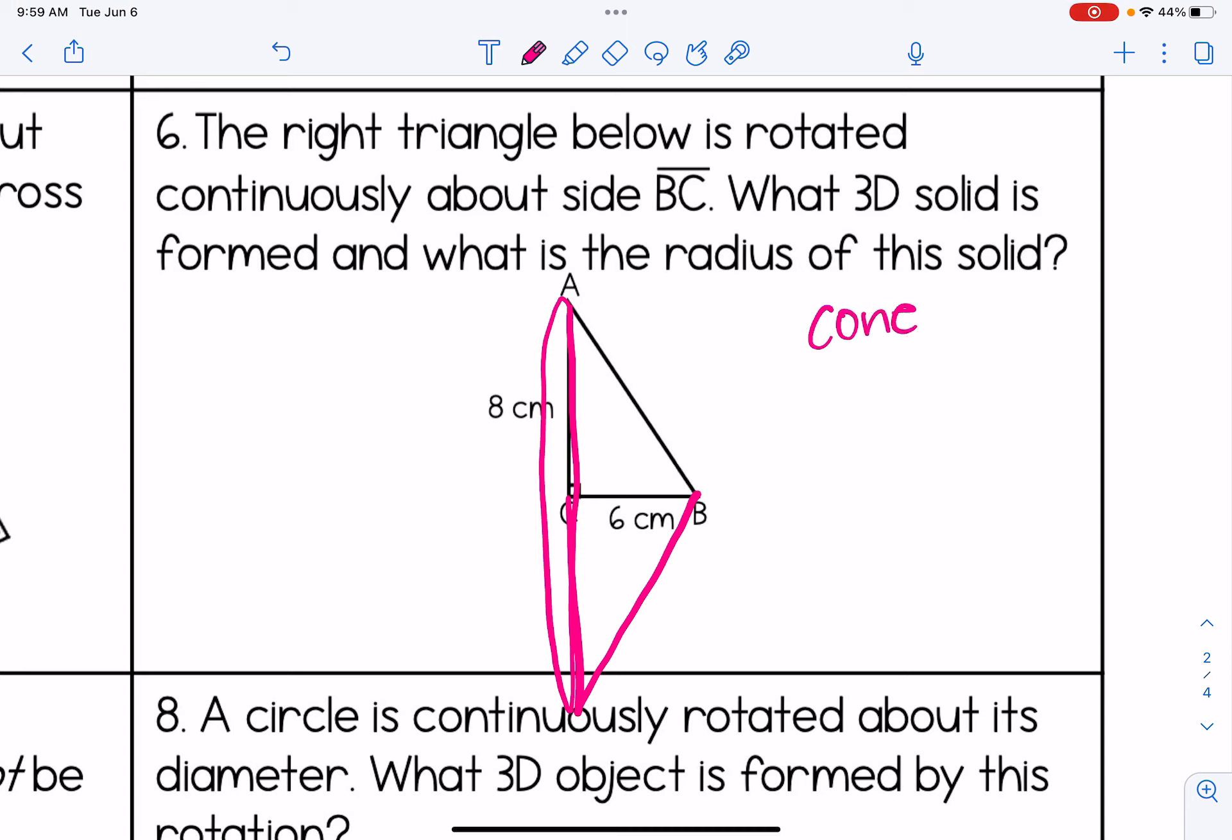And you can see that we get a cone. It's kind of looking like it's on its side here. And we can hopefully see if you tilt your head that the radius of the cone is 8 centimeters. If, by the way, the question asked about rotating about AC, then the answer would have been 6 centimeters for the radius.